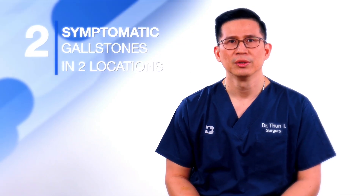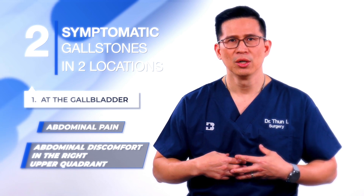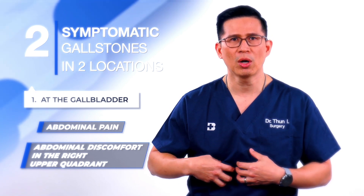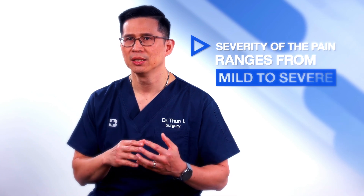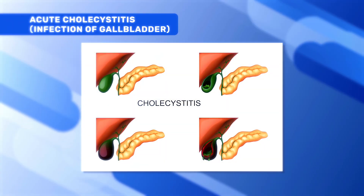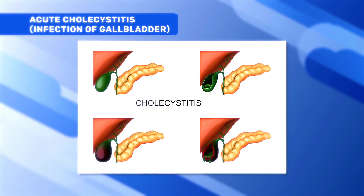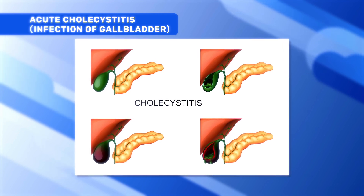Symptomatic gallstones are usually classified by two locations. The first one is at the gallbladder itself. If you have a stone obstructing the outlet of the gallbladder, the patient may present with abdominal pain or discomfort at the right upper quadrant or epigastrium area. The severity of pain varies — sometimes very mild, sometimes very severe. If there is infection, which we call acute cholecystitis, the patient will present with severe right upper quadrant pain with fever.